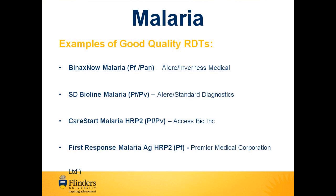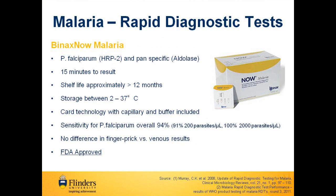The BinaxNOW malaria RDT is a card technology which can differentiate between Plasmodium falciparum and mixed infections of all four species. It has a shelf life of more than 12 months and a storage temperature range between 2 and 37 degrees Celsius, and a single test takes 15 minutes to complete. The sensitivity for Plasmodium falciparum was 90% or greater for different parasite loads. There have also been studies indicating no difference between finger prick and venous results, and currently the BinaxNOW malaria kit is the only RDT kit to be FDA approved.